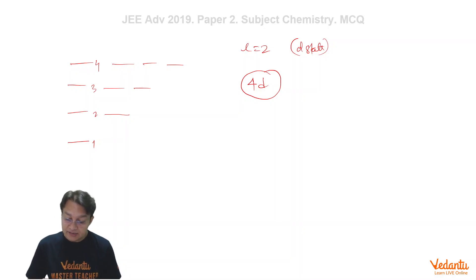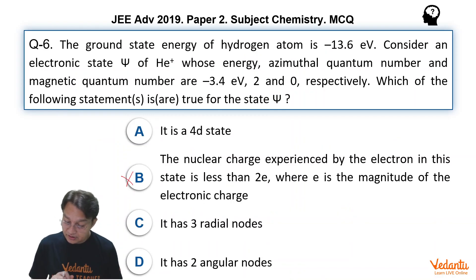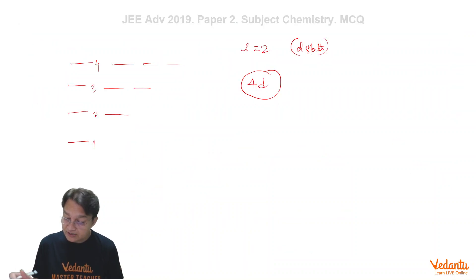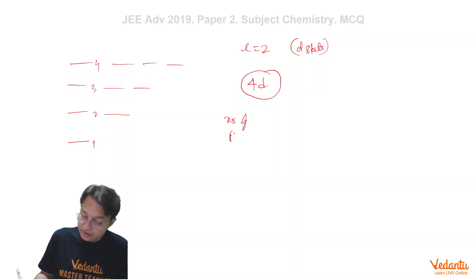And in this 4D state, now if we see the question, it has three radial nodes. No question of this, because 4D has only one radial node. Use the formula that number of radial nodes is equals to N minus L minus 1. And you can clearly see that is equal to 4 minus 2 minus 1 equals to 1. So radial nodes equals to 1.